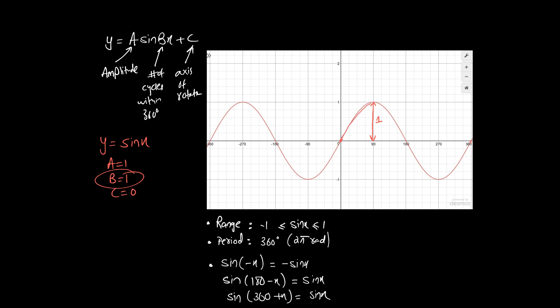This means the amplitude is 1, and there is one cycle within 360 degrees. You can closely observe that there is only one cycle within 360 degrees, so the period of the graph is 360 degrees and the axis of rotation is zero — the curve rotates about the mean position y = 0. The range of sin(x) is between minus one and one.